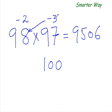Now in a cross fashion I subtract from 98 this 3, so 98 minus 3 is 95. And you'll get the first two digits. Or 97 minus 2 is again 95. So whether you do 98 minus 3 or 97 minus 2, it's one and only the same thing.